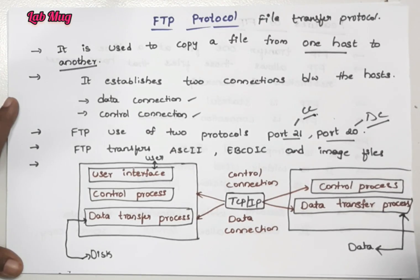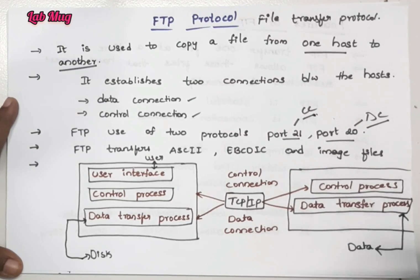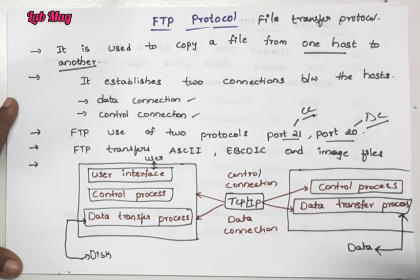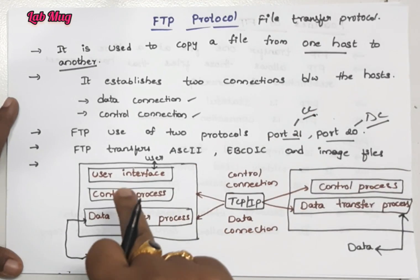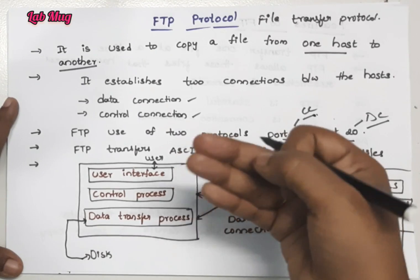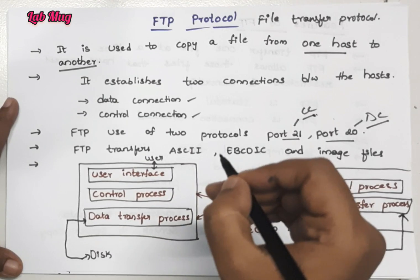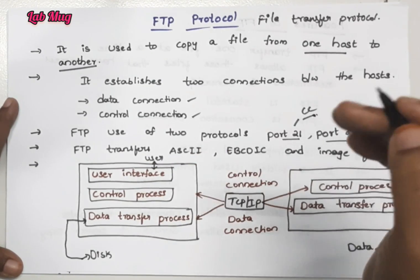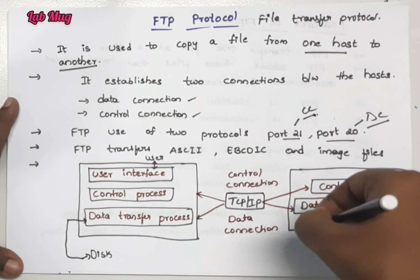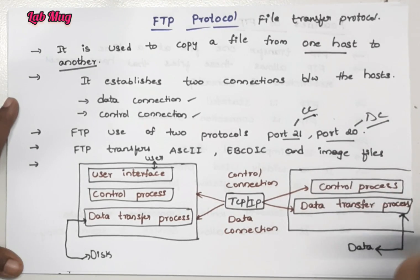After control connection, the actual type of data transfer happens through the data connection. Based on the data connection, we transfer the data. Through the data connection, we transfer the complete type of data. From the actual client computer, we upload - for example, attaching a file in Gmail is uploading. When that file is sent to another person and they save it to their system, that process is downloading. So uploading and downloading are both performed by using the file transfer protocol.